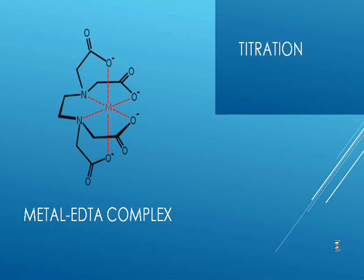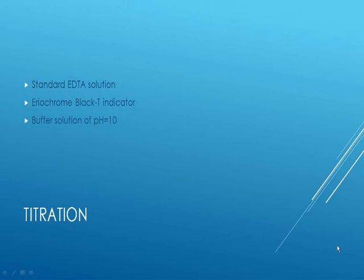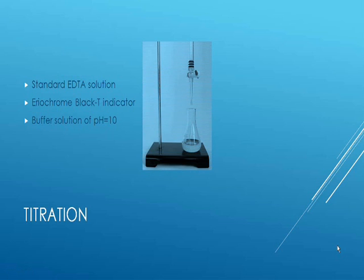Because of this, EDTA has the ability to sequester metal ions such as Ca²⁺ and Mg²⁺. For the titration we require a standard EDTA solution — meaning one with a known concentration — then Eriochrome Black T indicator to observe the color change at the endpoint, and a buffer solution of pH 10 to maintain alkaline conditions.